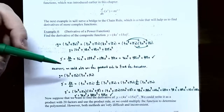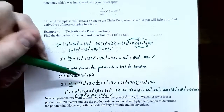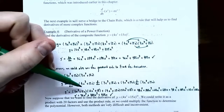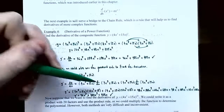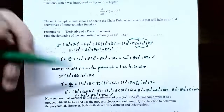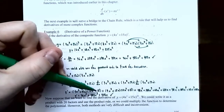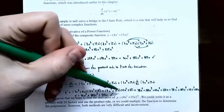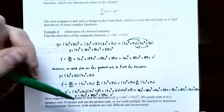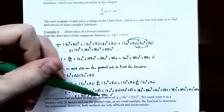Alternatively, using the product rule: write y = (4x³ + 15x)(4x³ + 15x). The derivative is the first function unchanged times the derivative of the second, plus the second function unchanged times the derivative of the first. The derivative of 4x³ + 15x is 12x² + 15. After simplifying using FOIL twice, you get the same answer: y′ = 96x⁵ + 480x³ + 450x.